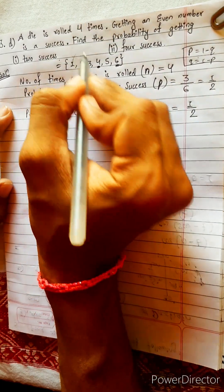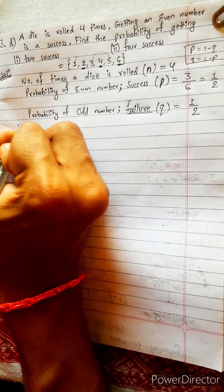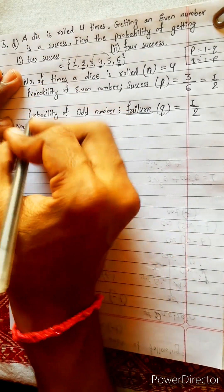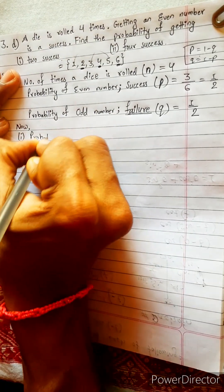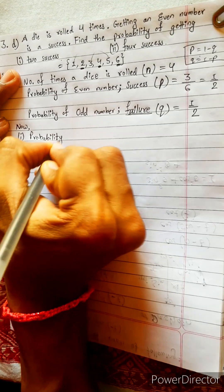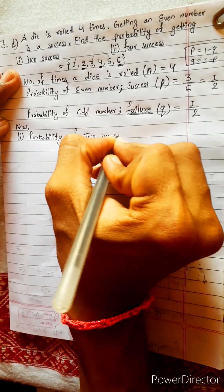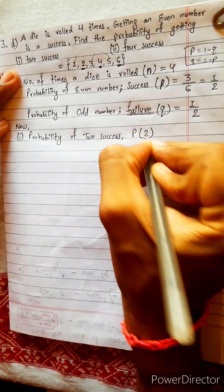And total odd number, there are total three odd numbers. So three by six, also one by two. Now, let's start to find one number. Two success. Now, probability, probability of two success. It is represented by probability of two success like this.